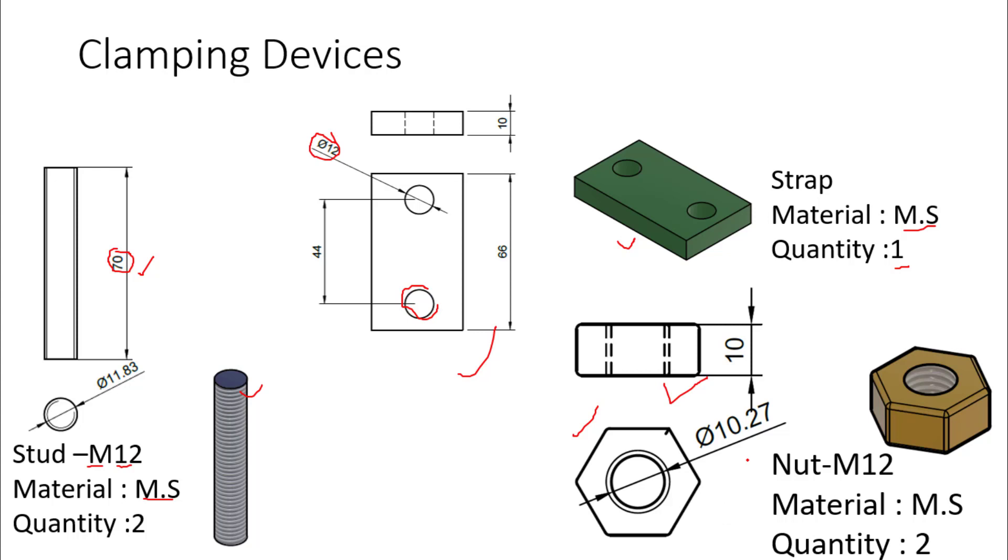And nut of M12 internal thread is used, two quantity of nuts with mild steel material. Also clamping devices we can directly purchase from the market or we can produce as per our requirement.